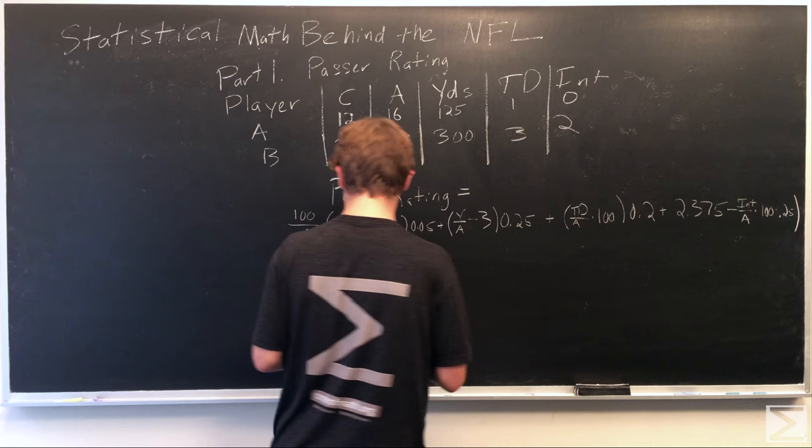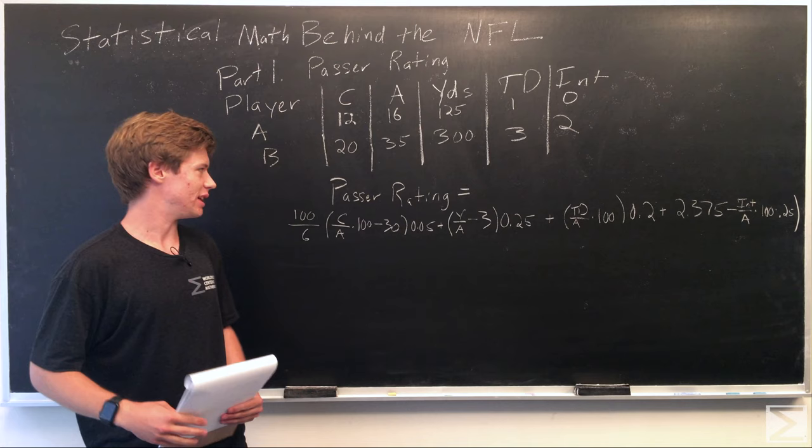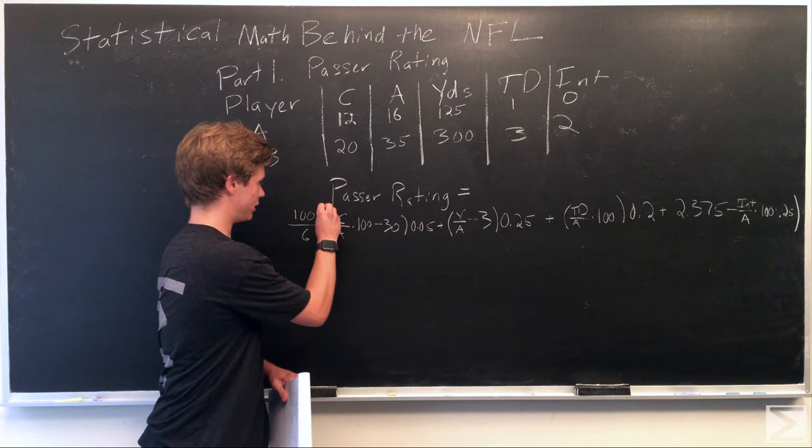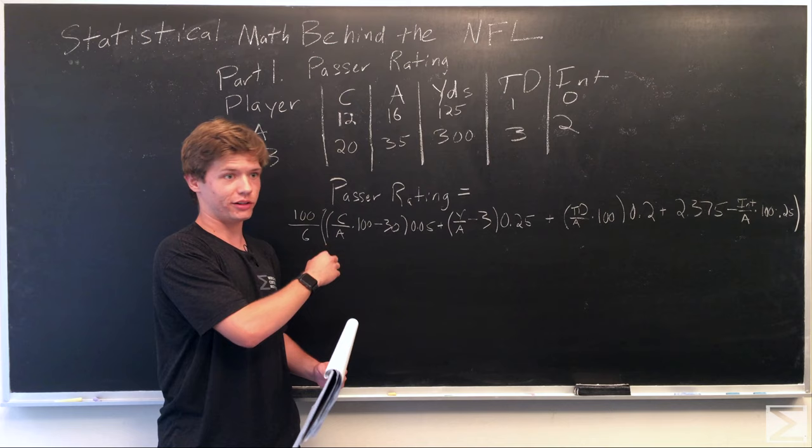This is the formula of passer rating all written out. Step by step walking through it: we take the completion percentage, which is C over A, multiply that by 100 to get the percentage, subtract 30, multiply it by 1/20th.